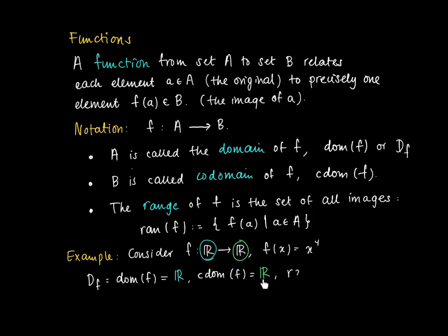And the range, if I take any number x and take the power of 4 of those numbers, then I create non-negative numbers. It's not hard to show that what I get is the set R plus, which is the closed interval on the left-hand side containing 0 until infinity.